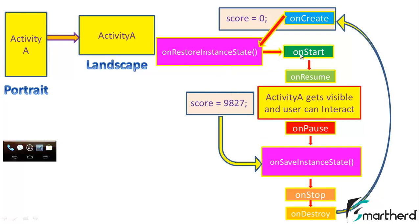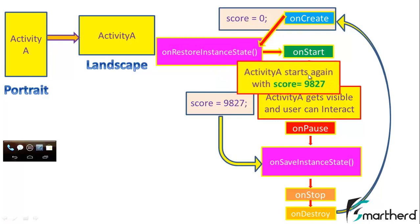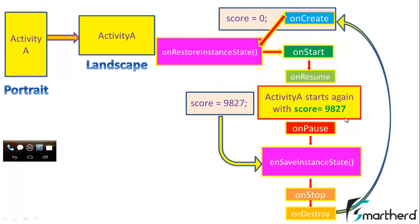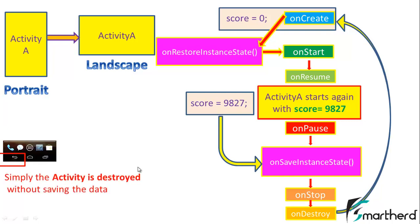After onRestoreInstanceState, onStart is called, and when onResume is called, activity A starts again with the score of 9827. The user won't be disappointed and can flexibly switch between portrait and landscape modes. However, if the user presses the back button, the activity is simply destroyed and no data is saved. These methods are only called when switching orientation modes — the back button simply destroys the activity because we are shutting down the application and don't need to save data.